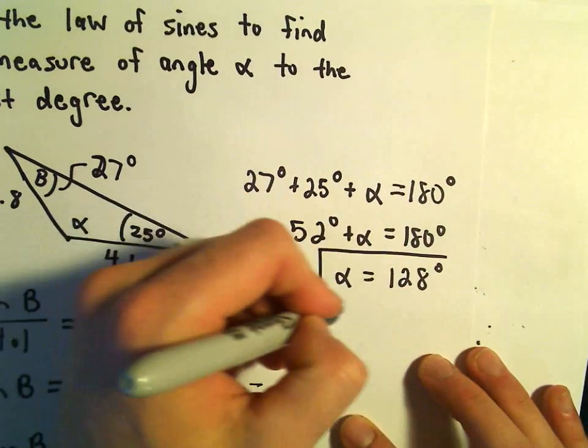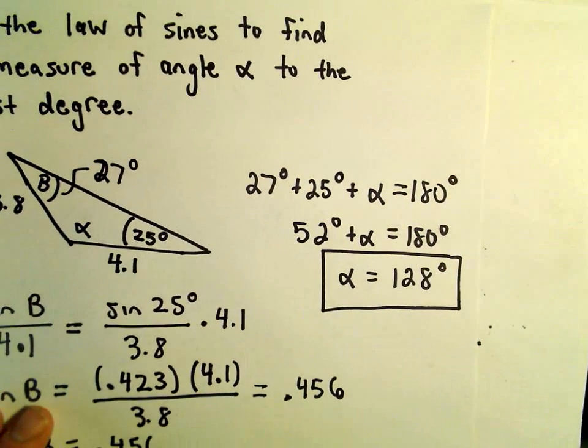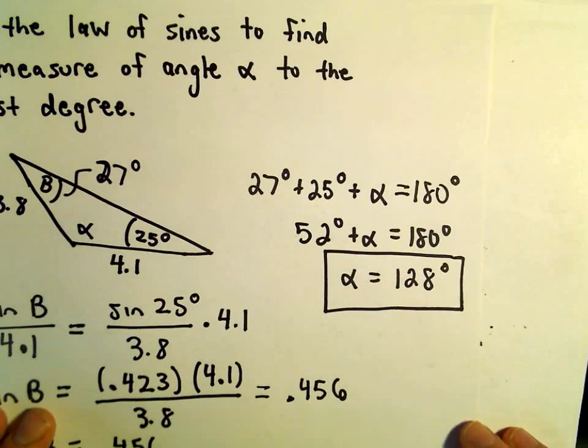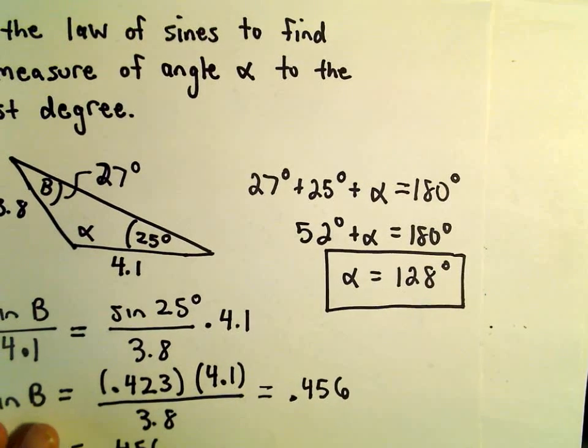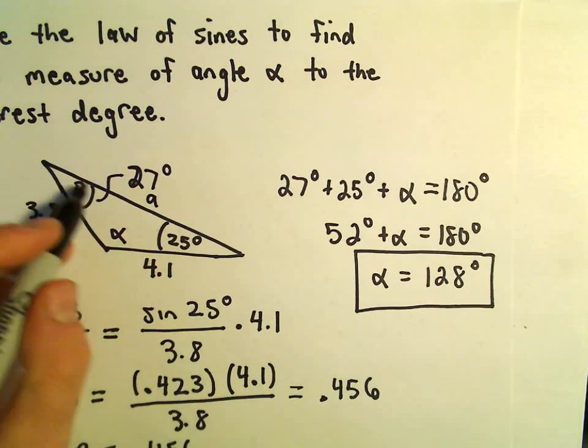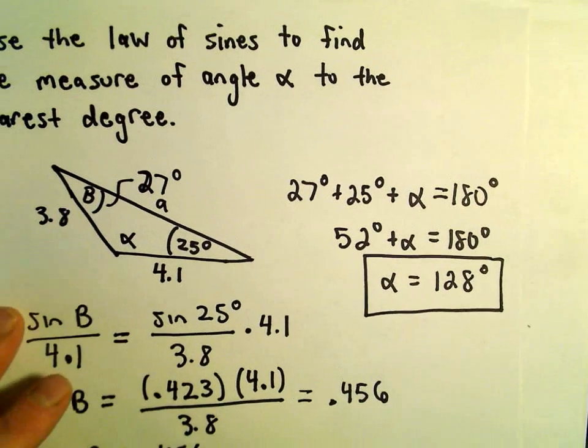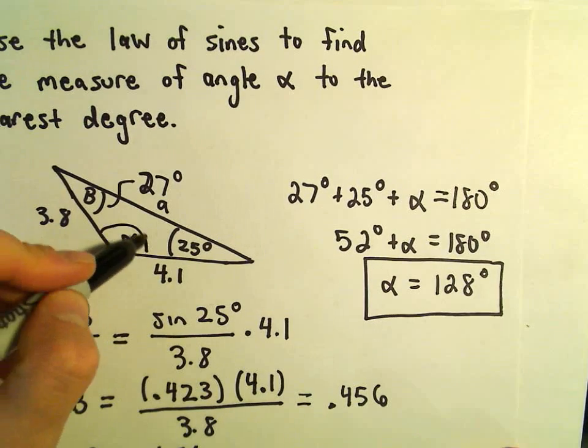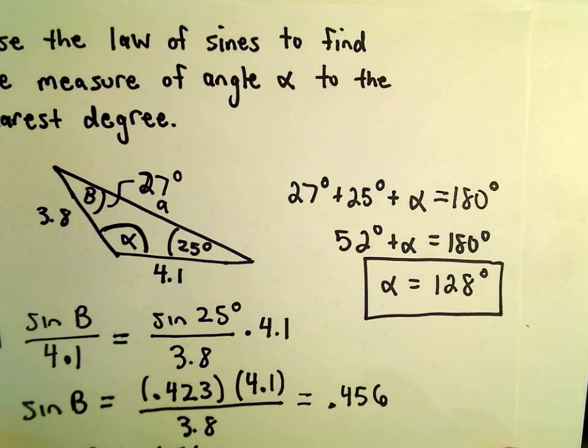So, it looks like in this case, our angle alpha is simply going to give us a measure of 128 degrees. You could always use the law of sines to actually figure out that missing length. But, in this case, all we're interested in is just finding that angle alpha.